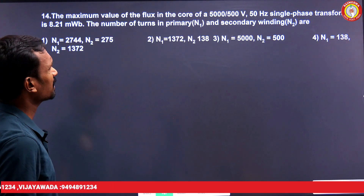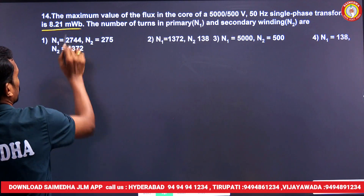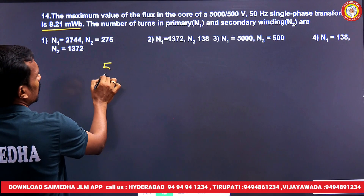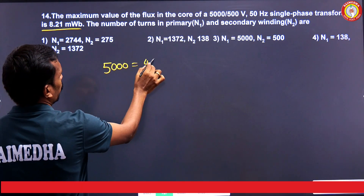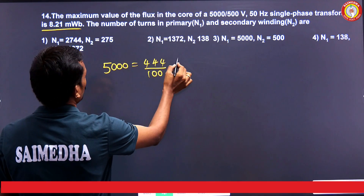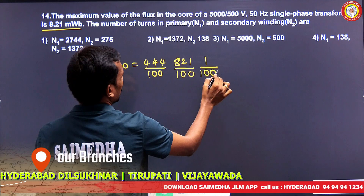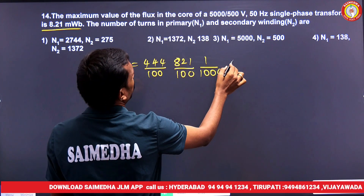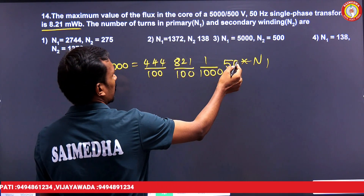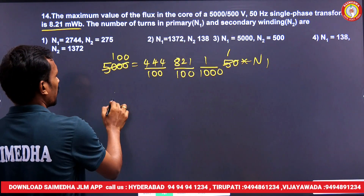Next question: the maximum value of flux in the core of a 5000/500 volt, 50 Hz single-phase transformer is 21 milliwebers. Find the number of turns N1 and N2. Using E1 = 4.44 × φm × F × N1, where φm = 21/1000 Wb and F = 50 Hz, we solve for N1.